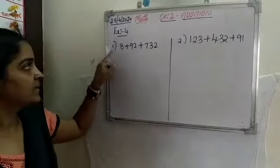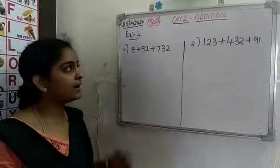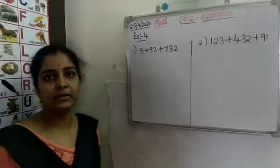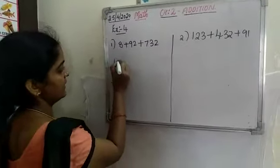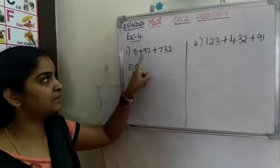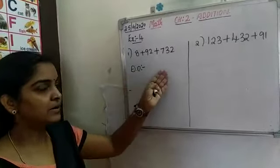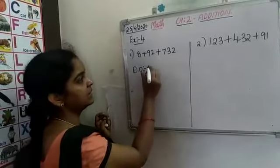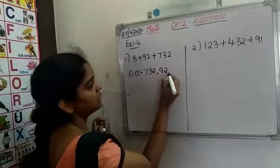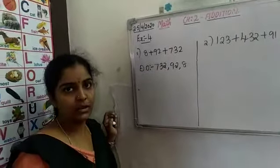Here in exercise 4 we are going to add addends that have different numbers of digits. So how will we add these numbers? First we will arrange these numbers in descending order — from big to small. Here we are having a 1-digit number, a 2-digit number, and a 3-digit number. In descending order, the big number comes first: 732, then 92, then 8. Now we will write them in columns and add the numbers.